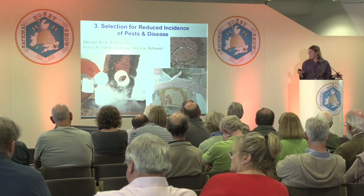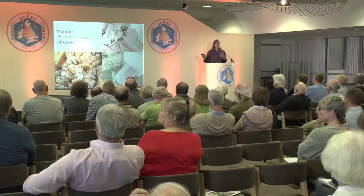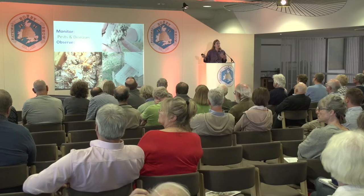We're always monitoring what's going on. I use a screen bottom board where I can look at the mite fall — the natural mite fall over time. I always have an uncapping fork and I'm always checking the drone brood because I'm pushing the drones. I need those drones — they're really essential for the program, maybe more than the queens. So you're always looking for these particular traits.